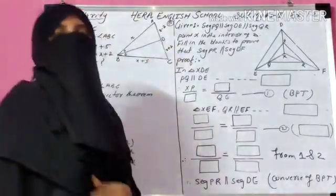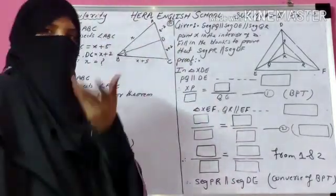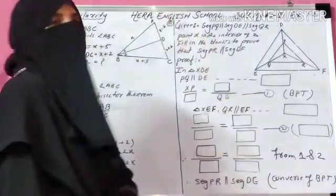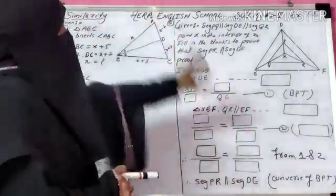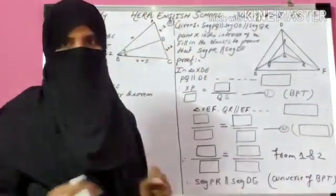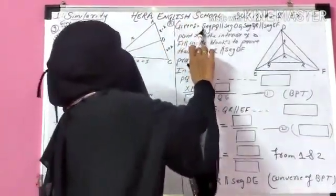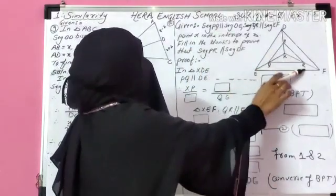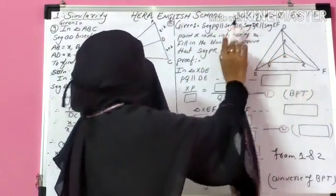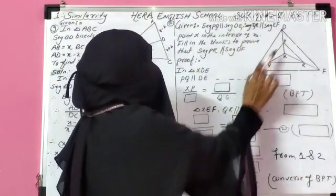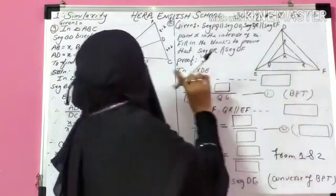Open your textbook — you can see this activity is given in your textbook and you have to fill the boxes. Question 10: segment PQ is parallel to DE, meaning these two lines are parallel, and segment QR is parallel to EF — these two lines are parallel.